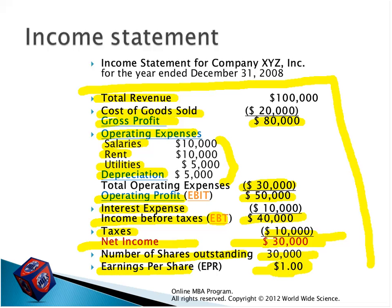A student is asking: what are interest expenses? Interest expenses are the interest we have to pay — for example, if we took credit from banks, we must pay interest on that credit in the future — like commissions on the credit. Another question: what is the number of shares outstanding? This is the number of shares the company has issued and are currently outstanding.